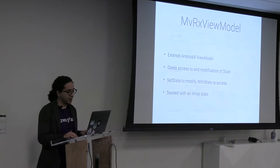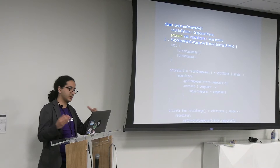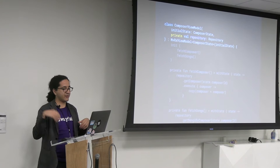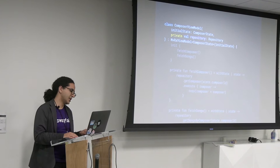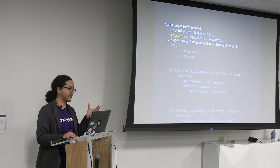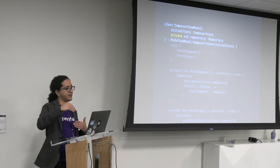In the constructor, Mavericks will — at construction time for the view model via property delegates — provide you an initial state. The second argument is the repository we'll use for pulling stuff out of, in my case, the Room database. You can supply that with the dependency injection framework of your choice. You extend MavericksViewModel, which is generically attached to the state you're interested in, and you do need to pass that initial state up to the superclass.